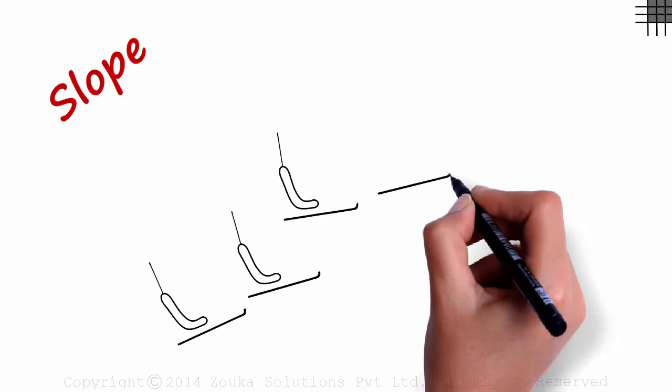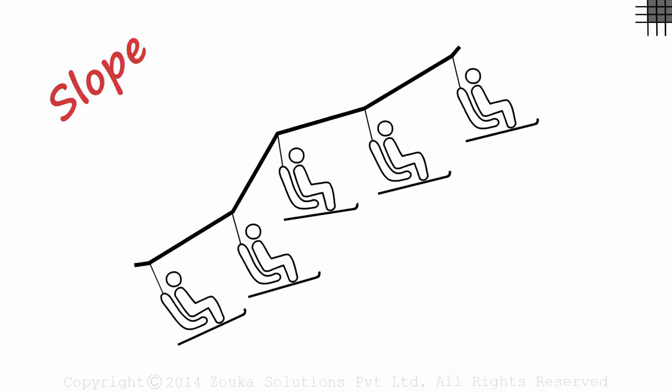One good way to understand slope is to look at a ski lift. You would see different lines here and all of them are tilted at various angles.